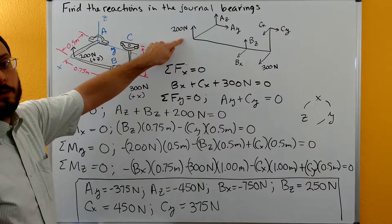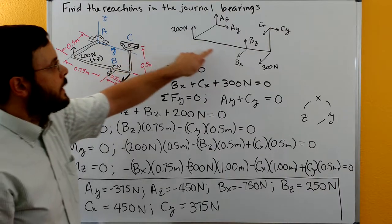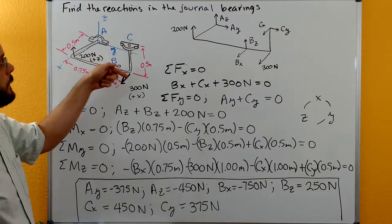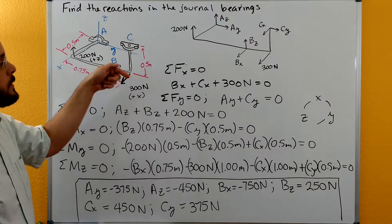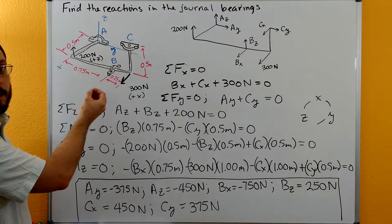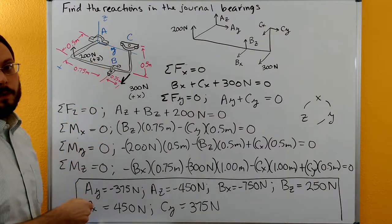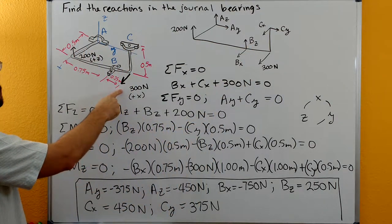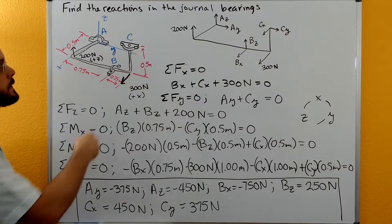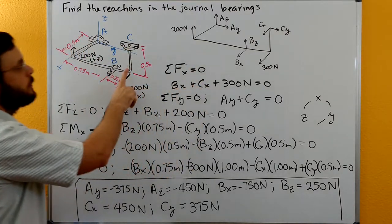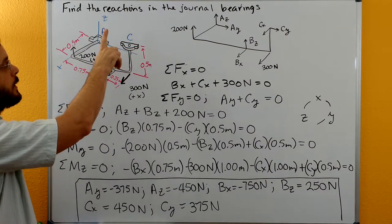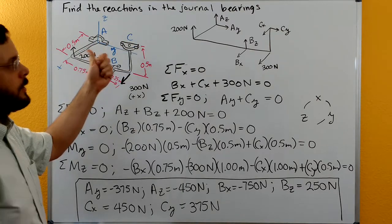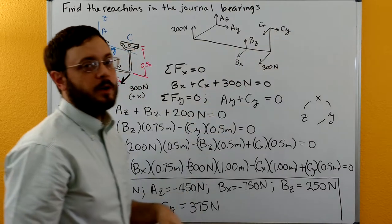We have our applied load of 200 newtons in the positive z direction, and then journal bearing at B. Again the rod can translate through, so there's no BY reaction. But we can't pull the rod in the x direction or up in the z direction without a reaction, so we have BX and BZ. We have the 300 newton force at the bend in the positive x direction. At C, the rod translates freely through in z, but we can't move it in y or x, so we have CX and CY.